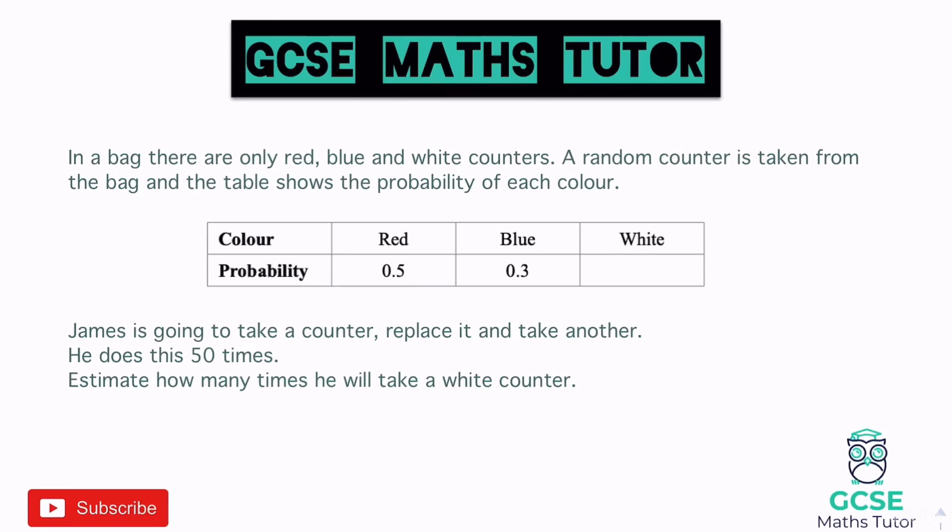We're going to start with this question. It says in a bag there are only red, blue and white counters. A counter is taken at random from the bag and the table shows the probability of each colour. We can see we are missing the probability of white.